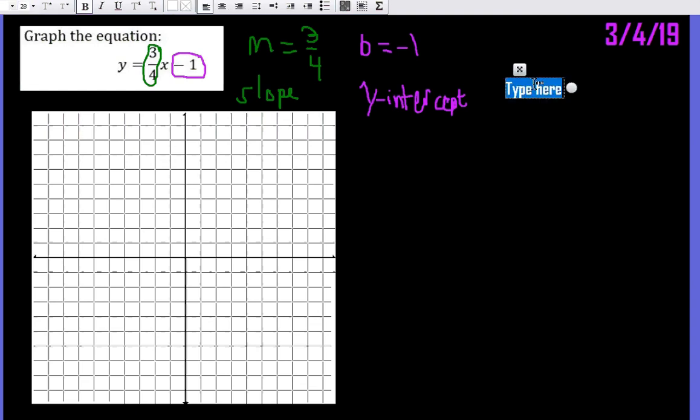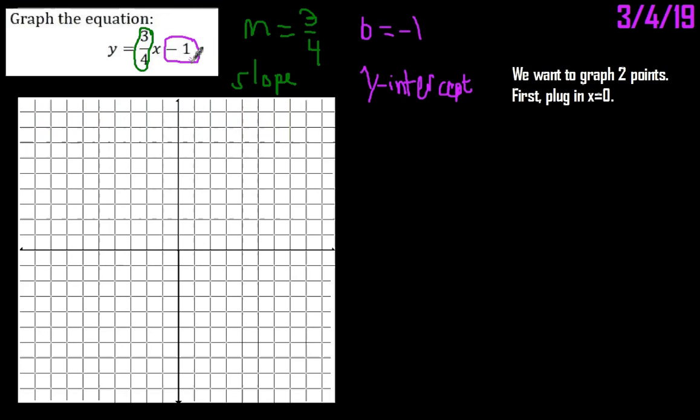So we want to graph two points. And so first, we're going to plug in x equals, well, let's say zero. That's an easy point to do, because what happens? Well, this whole term goes away, and so we're left with our y intercept.